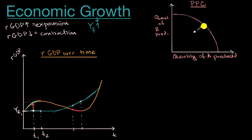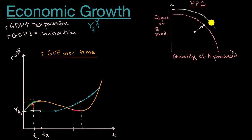But by the definition we're talking about here — which is not what is typically talked about in the news — we would not call that economic growth. Economic growth happens when we push out the production possibilities curve, when we have an increase in our full employment output. So economic growth might happen through new technology, more workers, resources, or better institutions — pushing our production possibilities curve out. This is an example of economic growth.